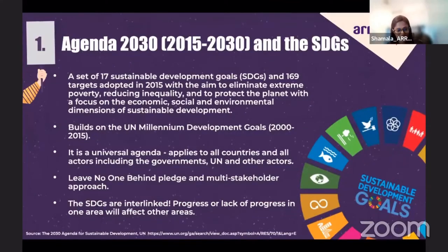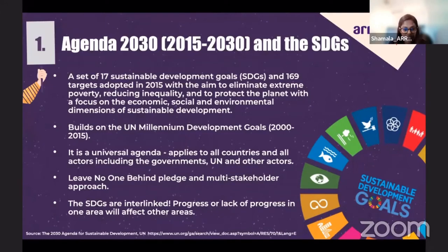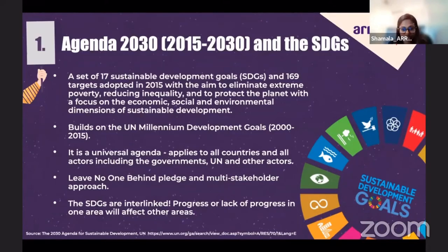Let's start with Agenda 2030. The Agenda 2030 is a universal agenda, also referred to as the most comprehensive blueprint for global action for achieving sustainable development. It consists of 17 SDGs and 169 targets, and it aims to eliminate extreme poverty, reduce inequality, and protect the planet with a focus on the economic, social, and environmental dimensions of sustainable development. It was adopted in 2015 by all countries of the United Nations, and it builds on the MDGs, the Millennium Development Goals, applying to all countries and actors, including governments and the UN.